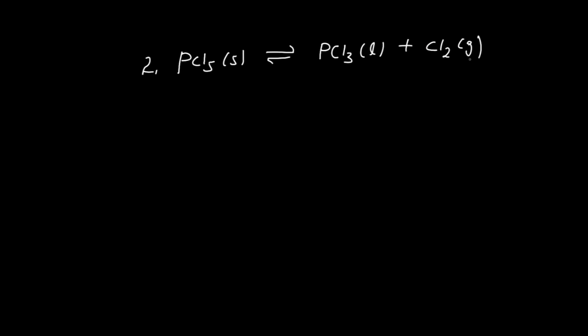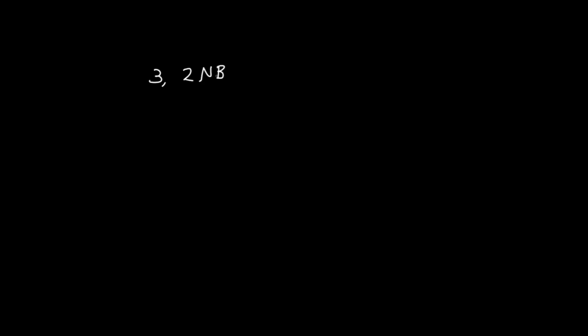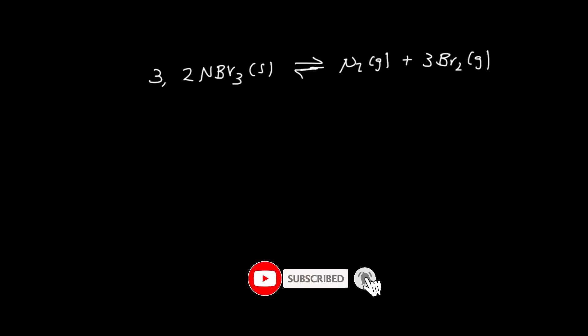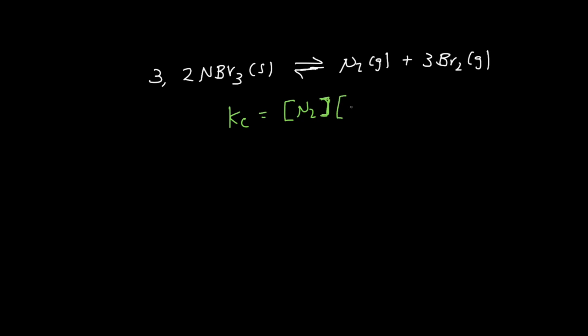For Kp expressions involving heterogeneous reactions, pure solids and liquids are excluded. For the decomposition of PCl5, the Kp expression includes only PCl3 and Cl2 as gases. Kp equals partial pressure of PCl3 times partial pressure of Cl2. For the reaction involving NBr3, Kp equals partial pressure of N2 times partial pressure of Cl2 to the power of 3.